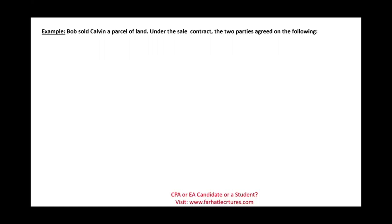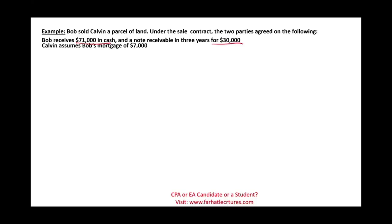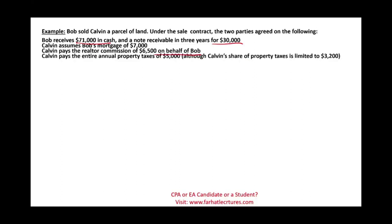Let's look at an example. Bob sold Calvin a parcel of land. Under the sale contract, Bob is to receive $71,000 in cash and a note receivable in three years for $30,000. Calvin assumes Bob's mortgage of $7,000. Calvin pays the realtor $6,500 on behalf of Bob. Calvin pays the entire annual property taxes of $5,000 although Calvin's share is limited to $3,200. Bob pays legal fees of $620 and Calvin pays legal fees of $920.